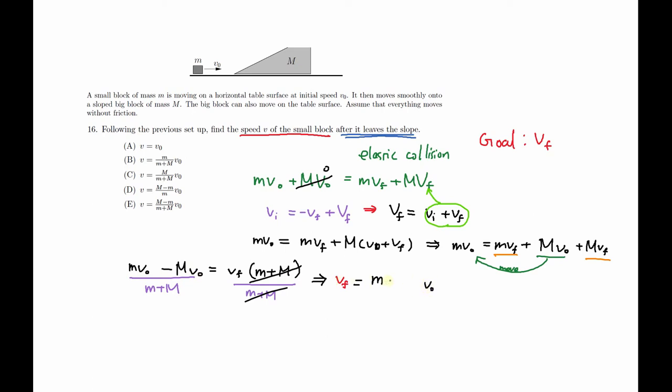So M minus big M over M plus big M. Okay, now you might wonder, well, we don't have an exact answer like that. That's because I was finding the velocity of the final, and this makes sense because we have a smaller mass than the big mass here, right?